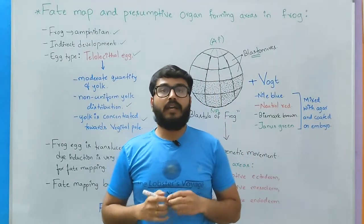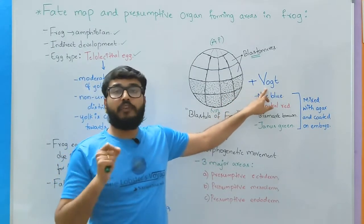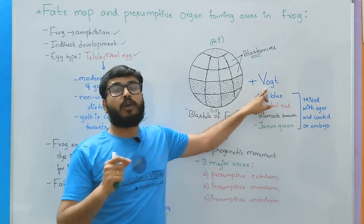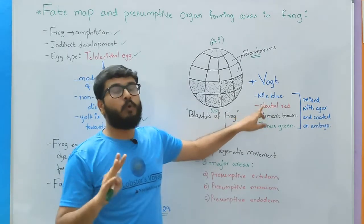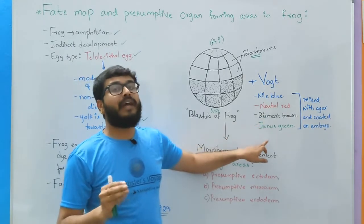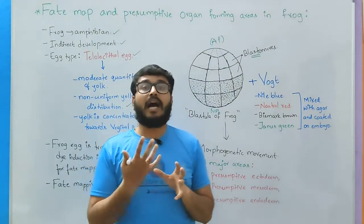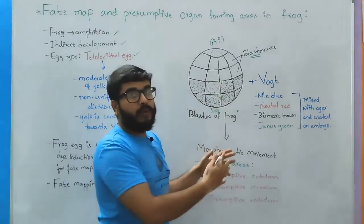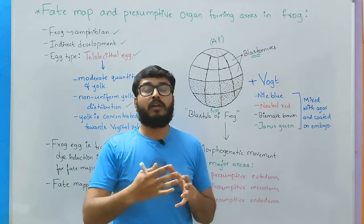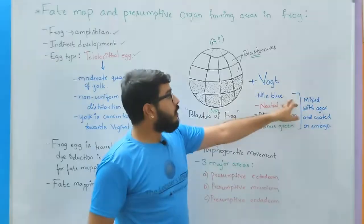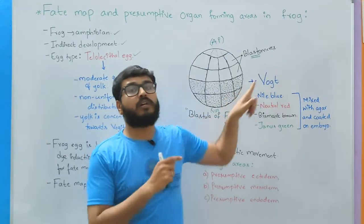When the frog egg is in the stage of blastula, we apply an artificial staining technique called as Vogt technique, wherein four natural dyes - nile blue, neutral red, Bismarck brown, and Janus green stains - are mixed with agar and these mixed agar are finally coated on the embryo. When you coat the agar on the embryo and allow it to stay for a calculated amount of time, the dyes that are mixed with the agar penetrate into each blastomere of the blastula.